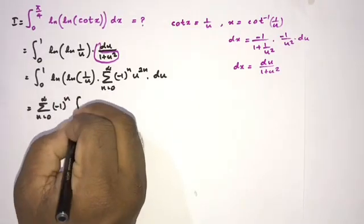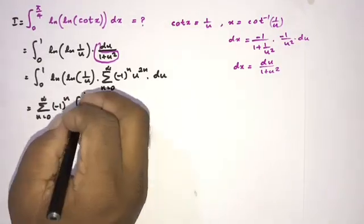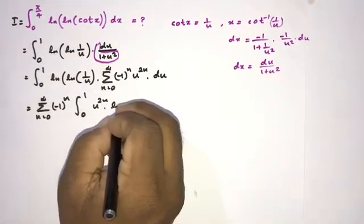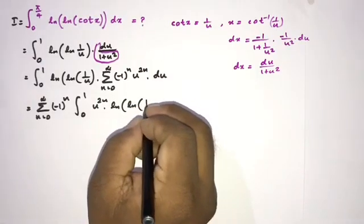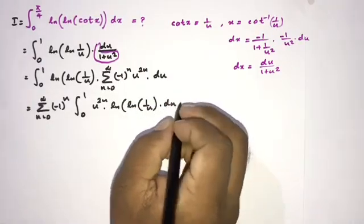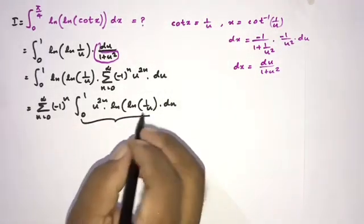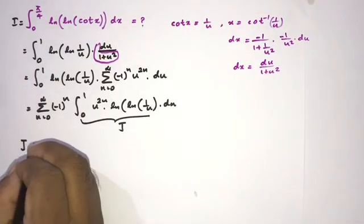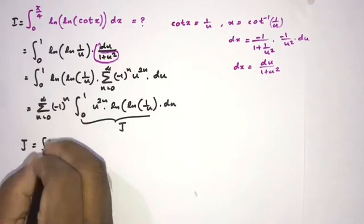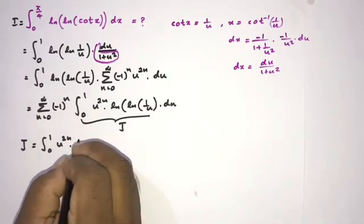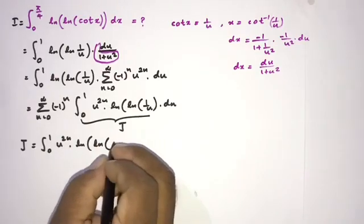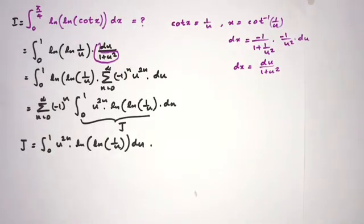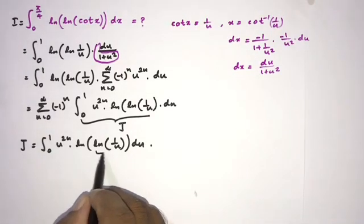We write the sum from 0 to infinity of (−1)^n times the integral from 0 to 1 of u^(2n) times ln(ln(1/u)) du. We call this inner integral J, so we need to evaluate J = ∫₀¹ u^(2n) · ln(ln(1/u)) du.